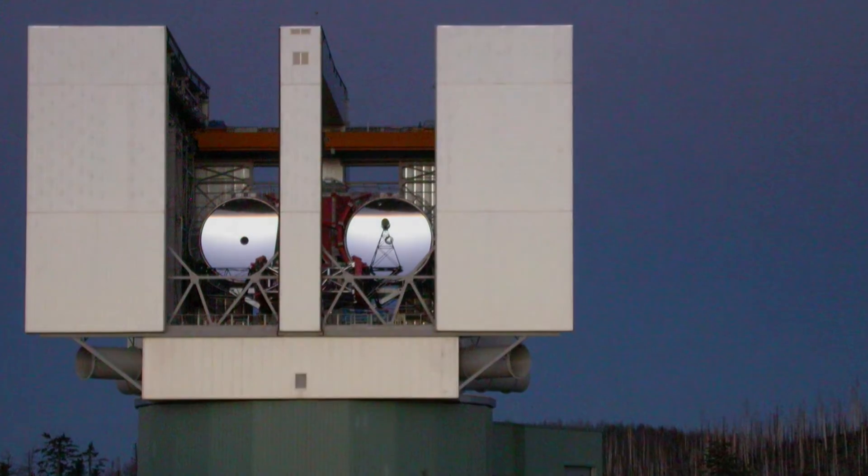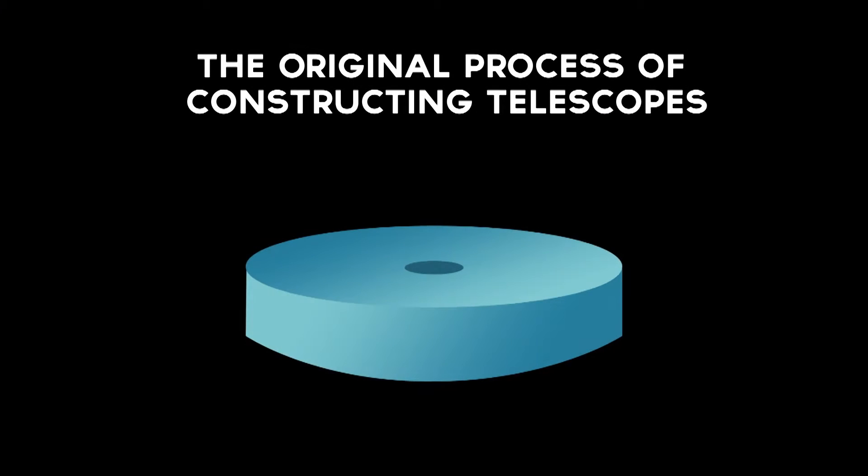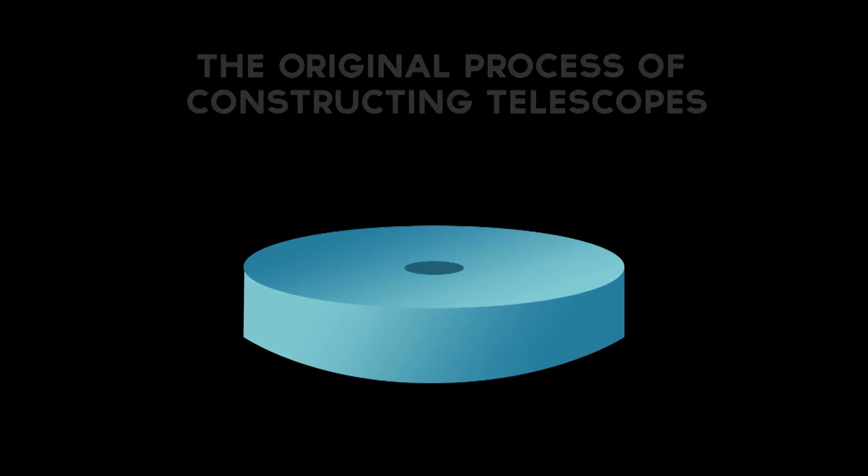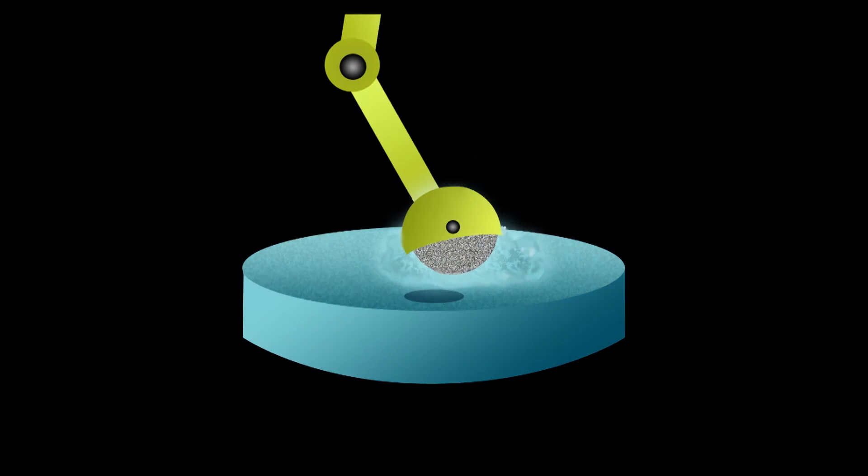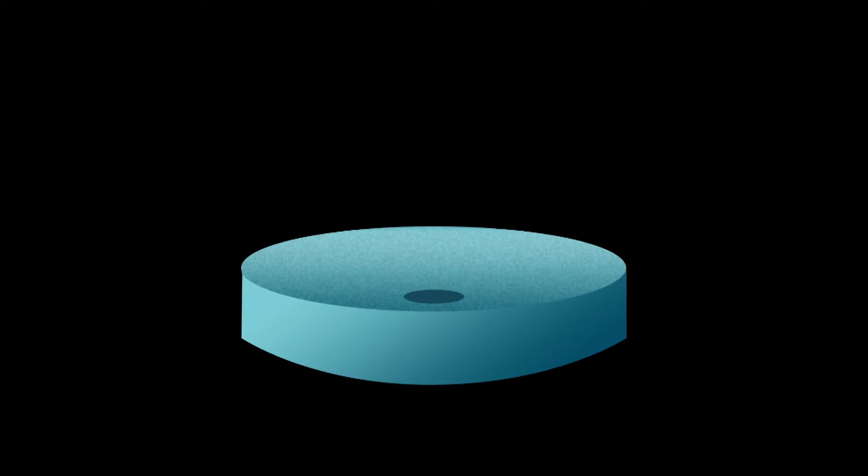However, there are substantial challenges in making large mirrors. Mirror making has traditionally begun with a mirror blank, a cylindrical piece of glass or ceramic with low thermal expansion. The blank is ground so that the optical surface has the correct curvature. This is by far the biggest chunk of work.